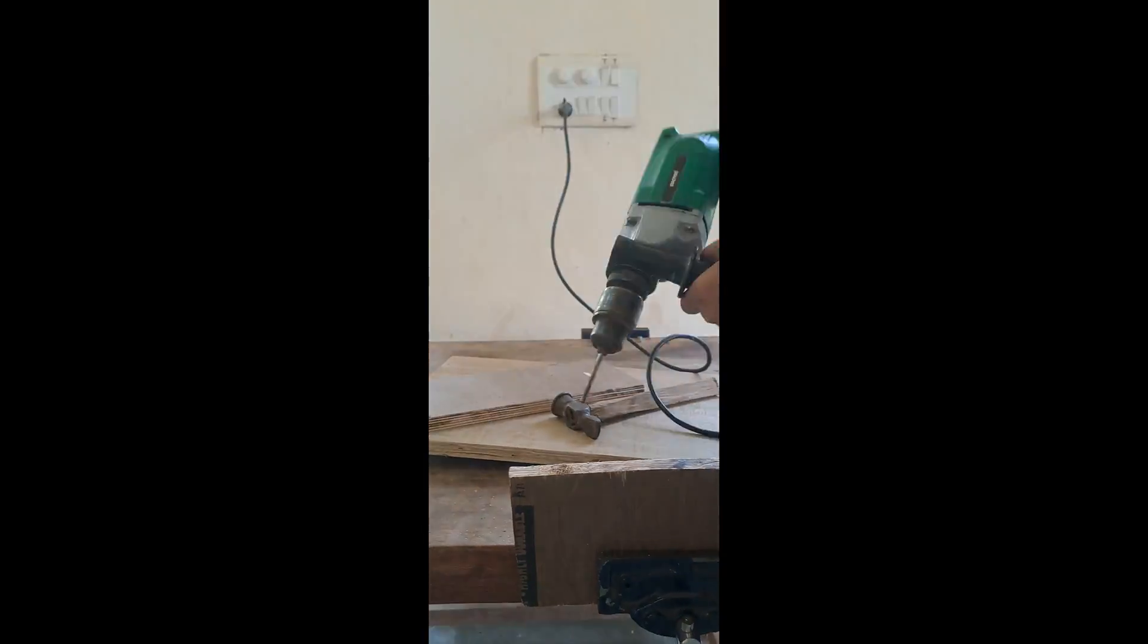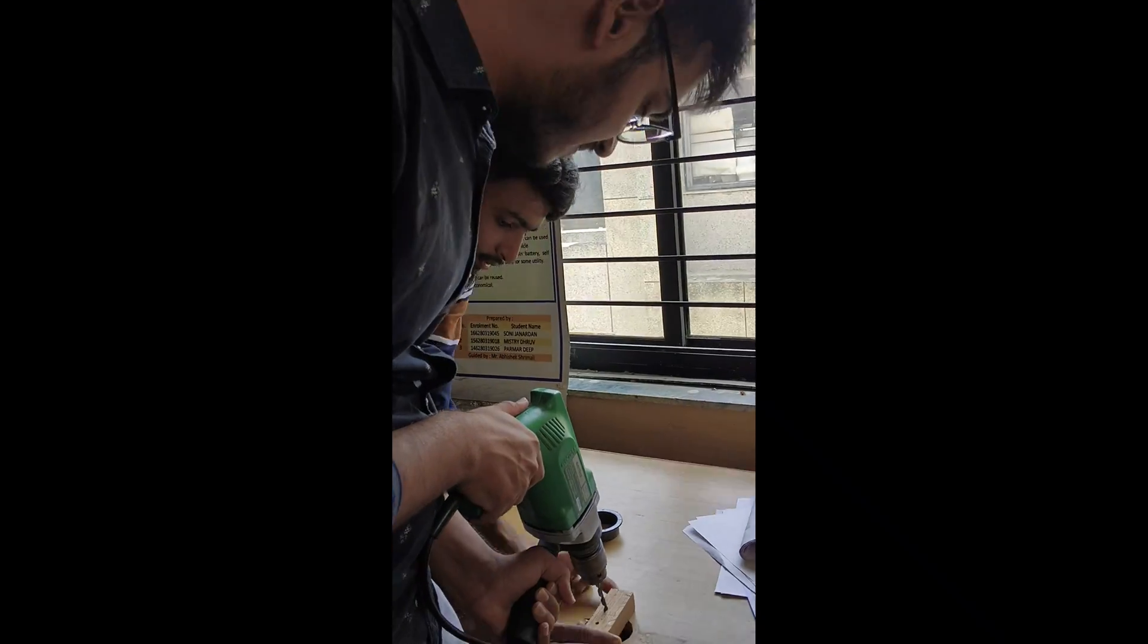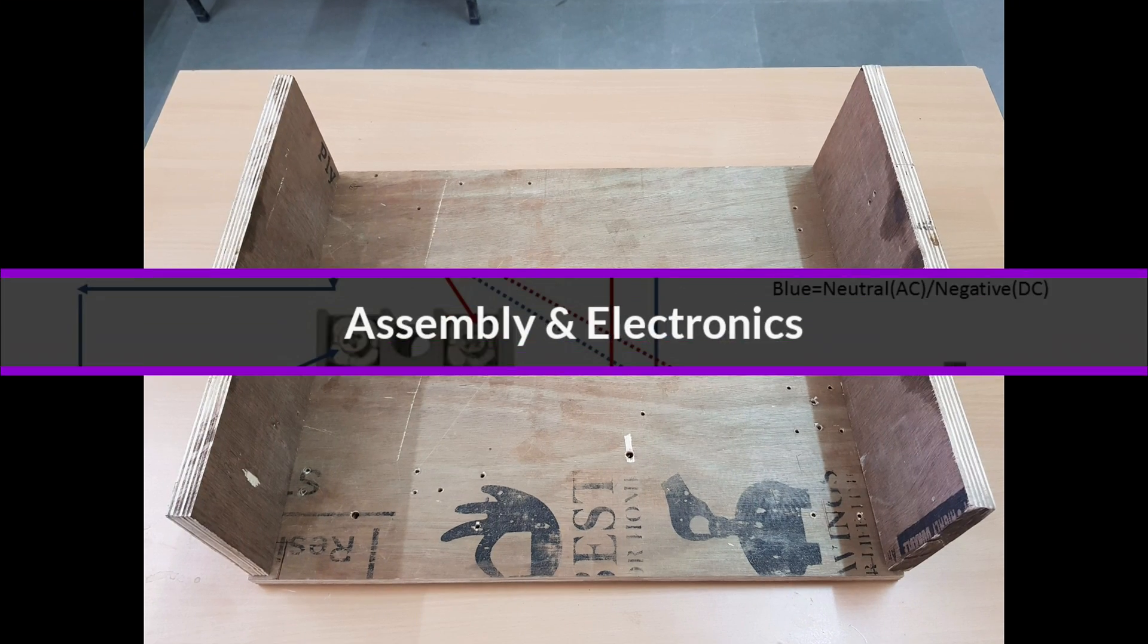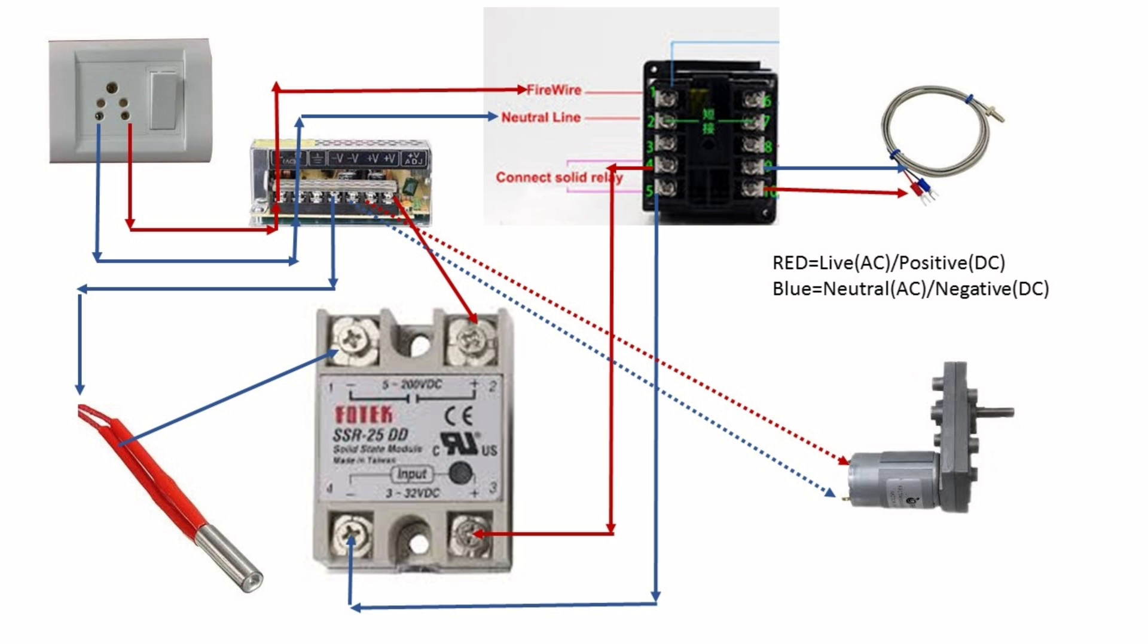I have made simple base from plywood. Now let's assemble all the electronics and parts on the wooden base. Here is the circuit diagram I have used for connection. This is inspired by Creative 3DP.